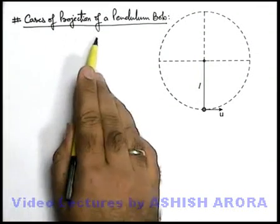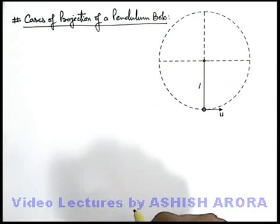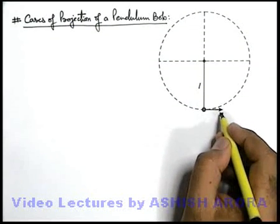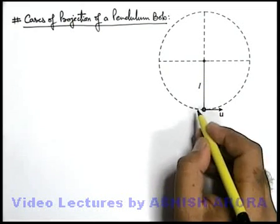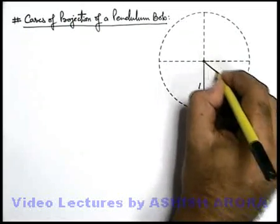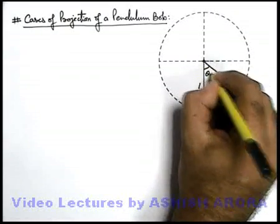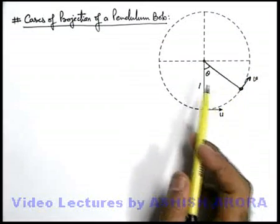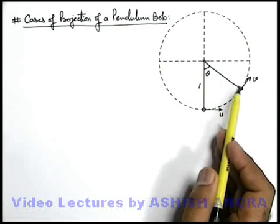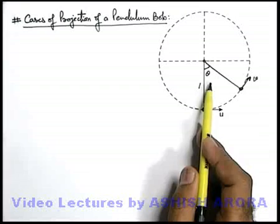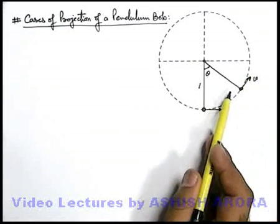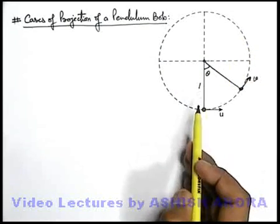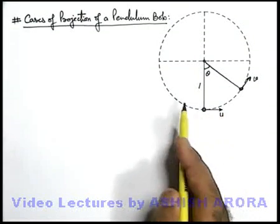Let us discuss various cases of projection of a pendulum bob in vertical circular motion. If we have a pendulum bob of string length l, and from the bottom position we throw it with speed u, we have already analyzed that at an angular displacement theta, the speed of the bob is given by equation 1, and the tension in the string by equation 2. We also have the direct relation for the angle where speed becomes zero and where tension becomes zero. In the lower half of the circle, tension in the string will never be zero. Tension becomes zero only if the speed is sufficient to take the bob to the upper half of the circle. Here we analyze the various cases of projection.